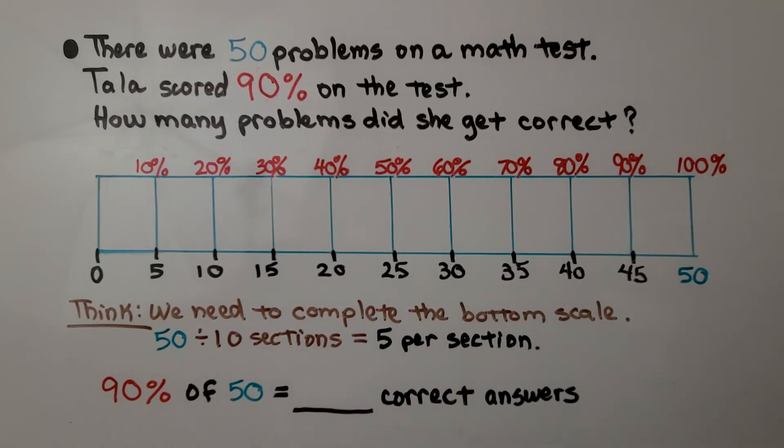Now, we can look at 90% and see that that would be 45 questions correct. That means she got 45 correct answers. 90% of 50 is equal to 45.